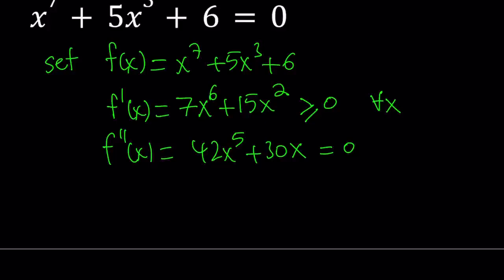With this one, we can take out a 6x. And inside, we would have 7x to the fourth power plus 5. Now, when you set it equal to 0, 7x to the fourth power plus 5 is always positive, therefore it cannot equal 0.